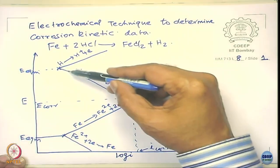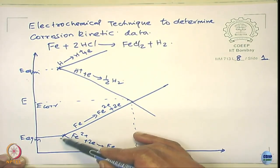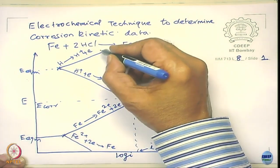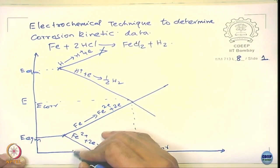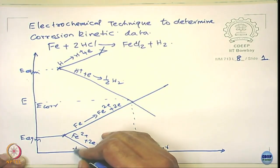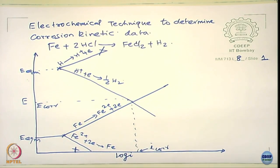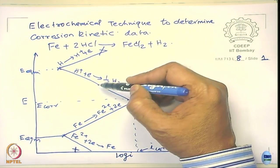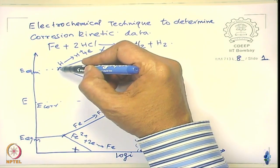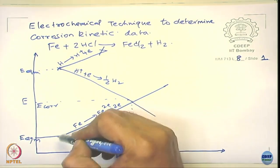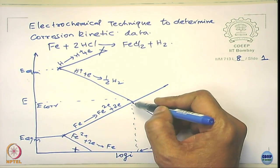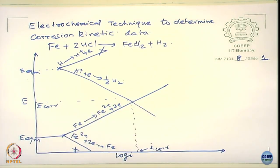In the corrosion reaction, what are the governing relationships that affect the corrosion rate? These particular kinetics here govern it. These others do not really affect it at all. I need to determine the Tafel slopes, the exchange current density, and of course I need to determine the I_corr and E_corr values.